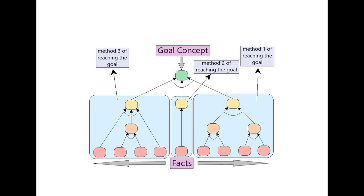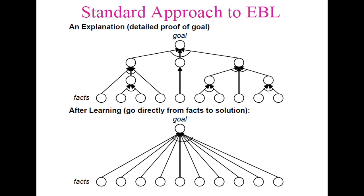During training, once the training is completed and learning has happened, the goal can be directly identified from the basic facts, instead of going through the various paths from the constructed proof tree.